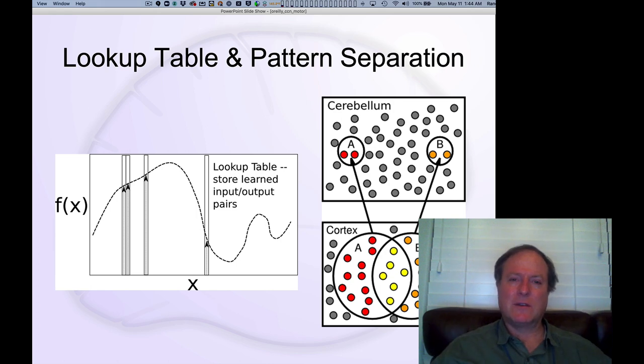But by far the simplest, most robust way to learn this information is just to memorize it. And then perhaps to interpolate between the data points that you've memorized to give some kind of smoothness to the overall function. And that's a pretty good assumption about what's happening in the cerebellum. And it turns out also in the hippocampus, as we'll look at in the memory chapter. The basal ganglia may be not quite as much to the same extent.